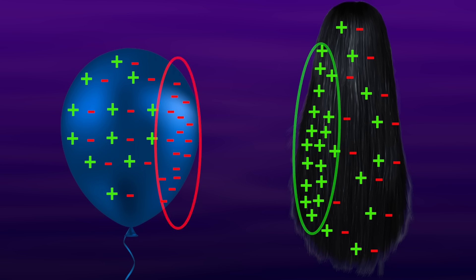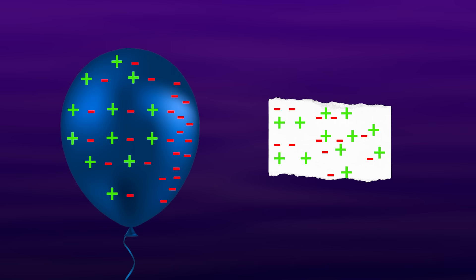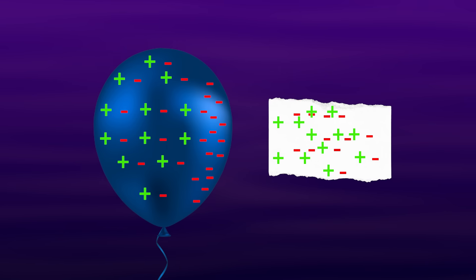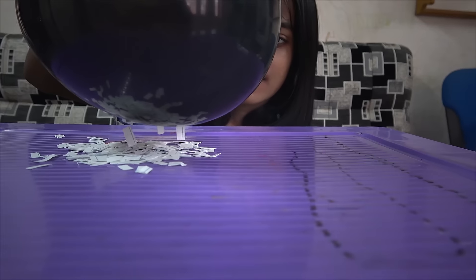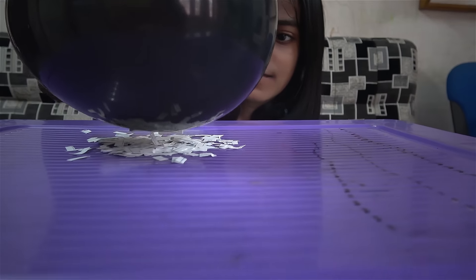We call it static because the trapped charge remain unmoving on the surface looking for a way out. When the charged balloon is brought near a paper which is neutral by itself, the negative charge in the balloon pulled the positive charges in the paper towards it and caused a charge separation in the paper. And as a result of this, paper was attracted.